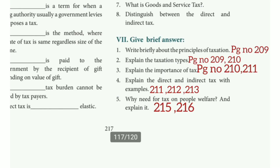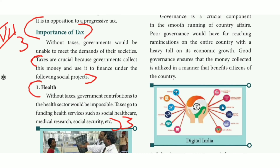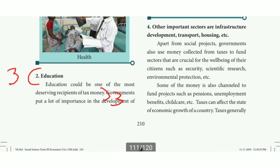Third long answer question: explain the importance of tax. Refer to page numbers 210 and 211. On page 210, under importance of tax heading, third line — then health heading.